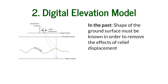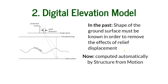Why did we used to need a digital elevation model? As you can see, this point and this point have the same coordinates — the same latitude and longitude — but if we take a picture of this area we can see there is a relief distortion problem. This point is supposed to be where the datum plane is, but it is depicted in a different spot because of local relief. In the past, the shape of the ground surface had to be known to remove these distortion effects. Right now it is computed automatically by structure from motion.